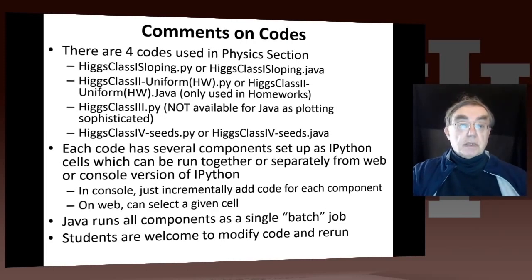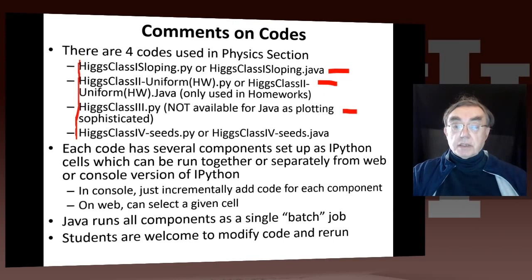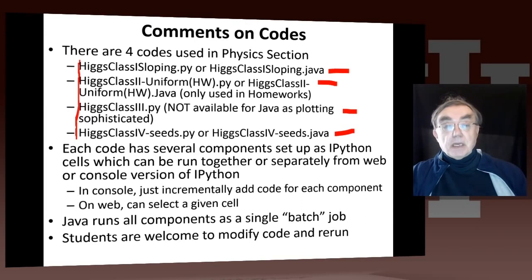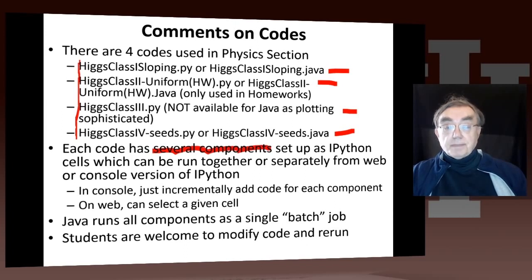There are four codes in this section, available from the files tab. Class one is used in this unit. Class two is only used in projects and homework, but it's available on the tab. Class three is used in the following unit, and class four is used in the fourth unit of the physics section. Note that class three does not have a Java version, because it has such sophisticated plotting we were not able to reproduce that in Java. Each code has several components and runs different choices of parameters, set up as IPython cells on the web interface. You can either run them together by default or run them separately by selecting them.